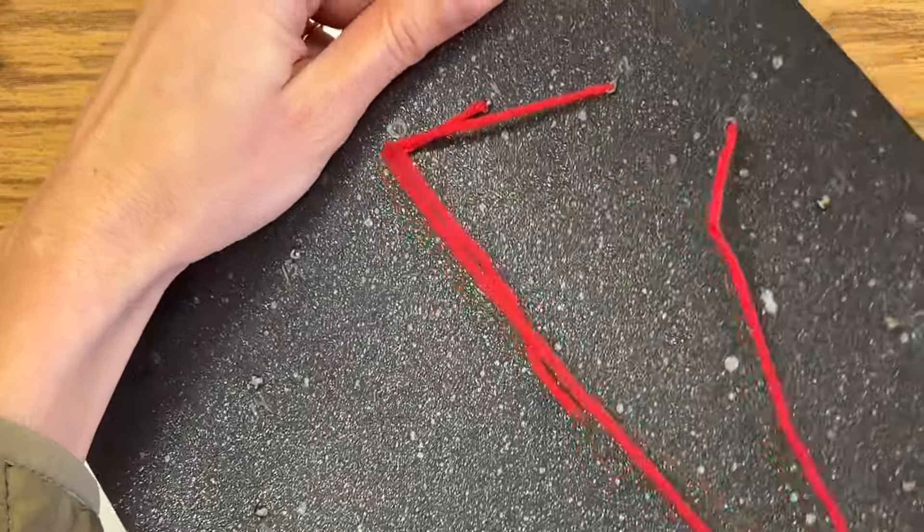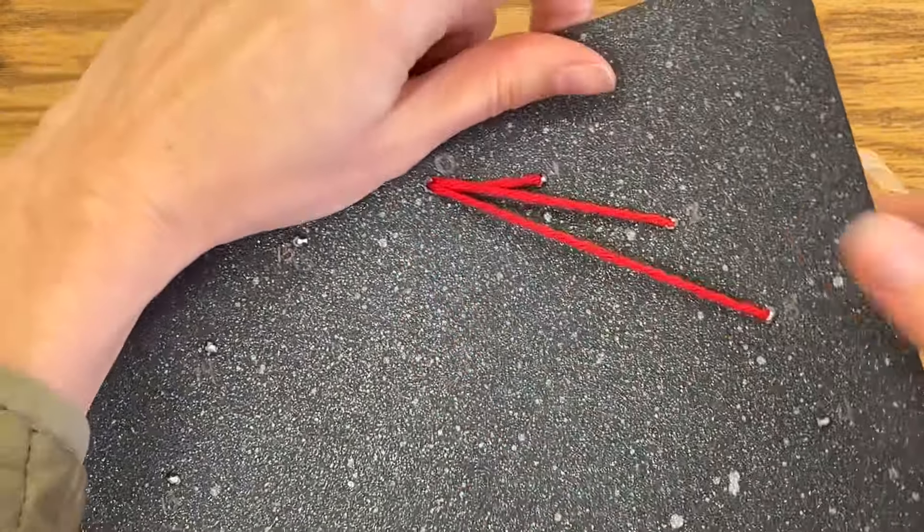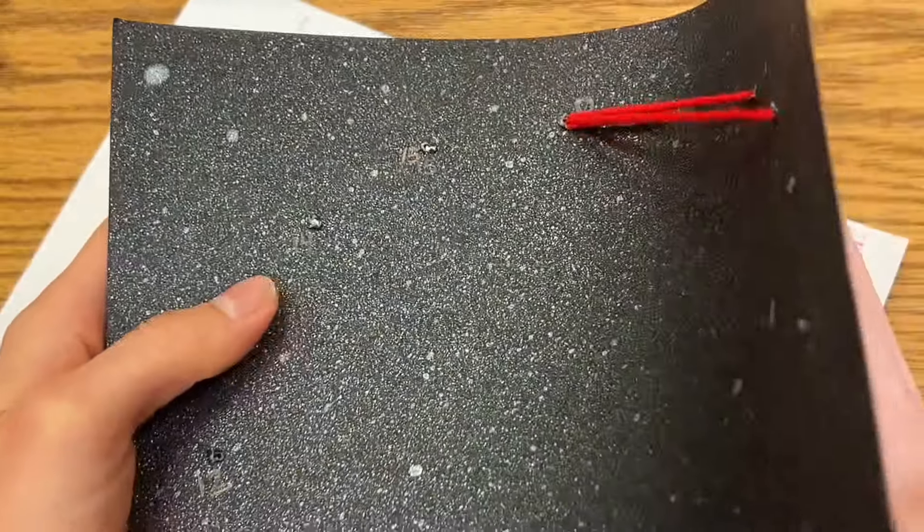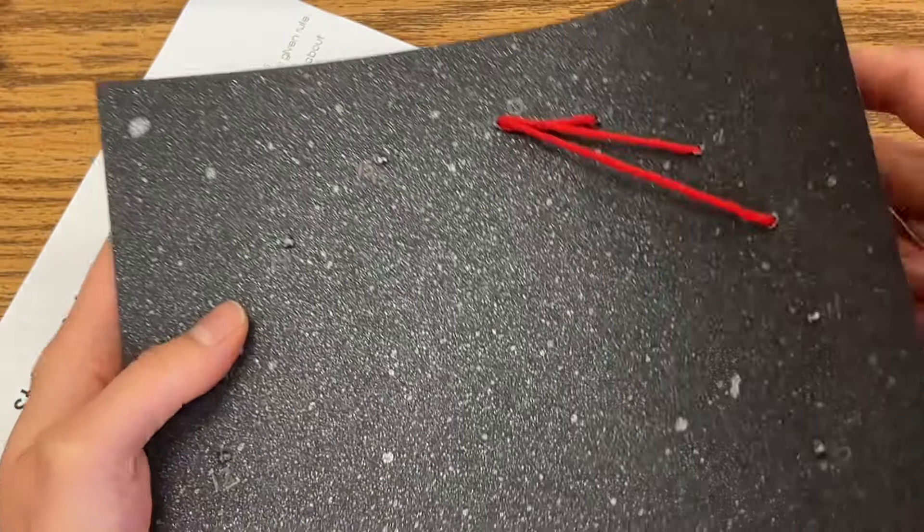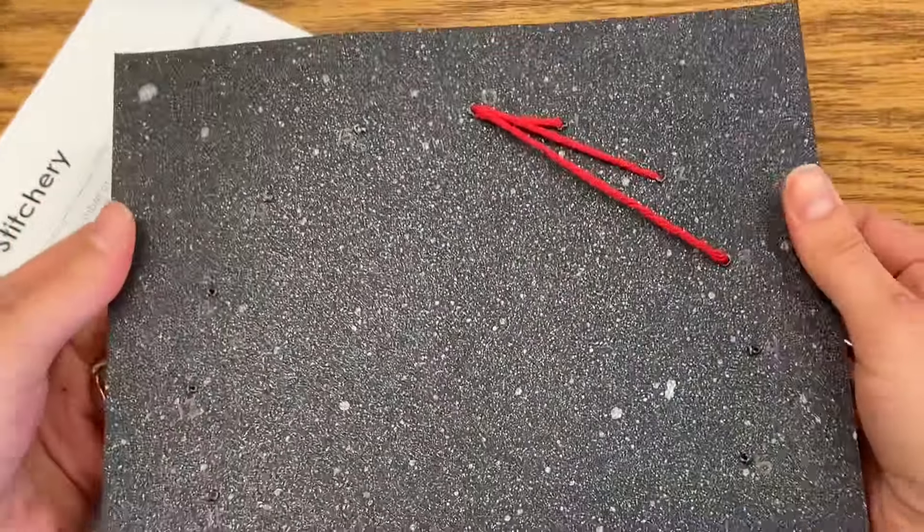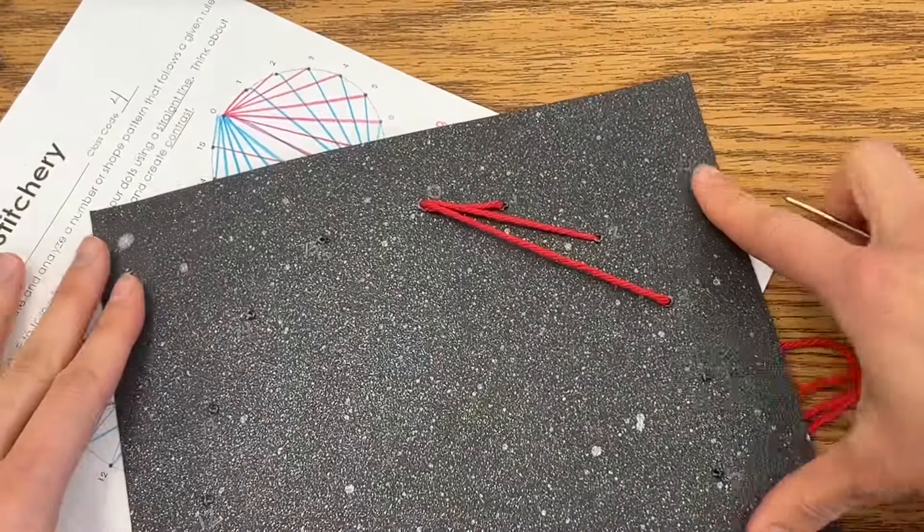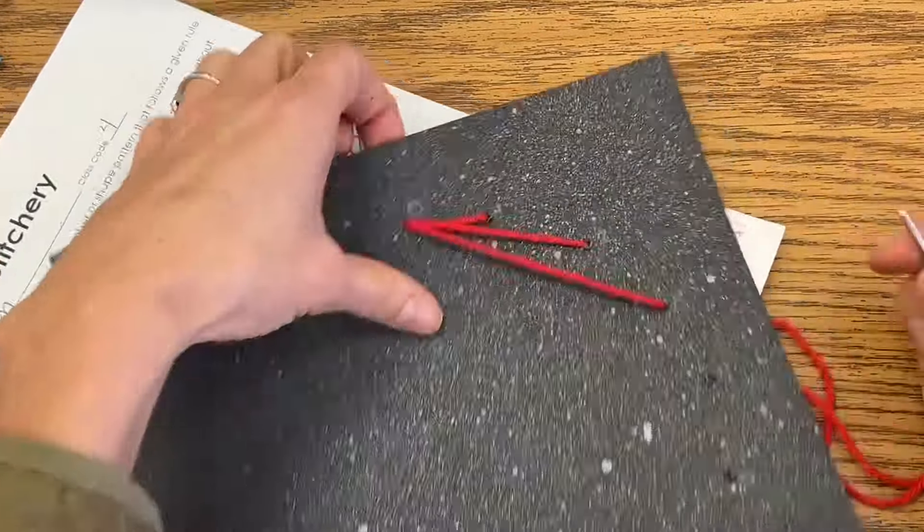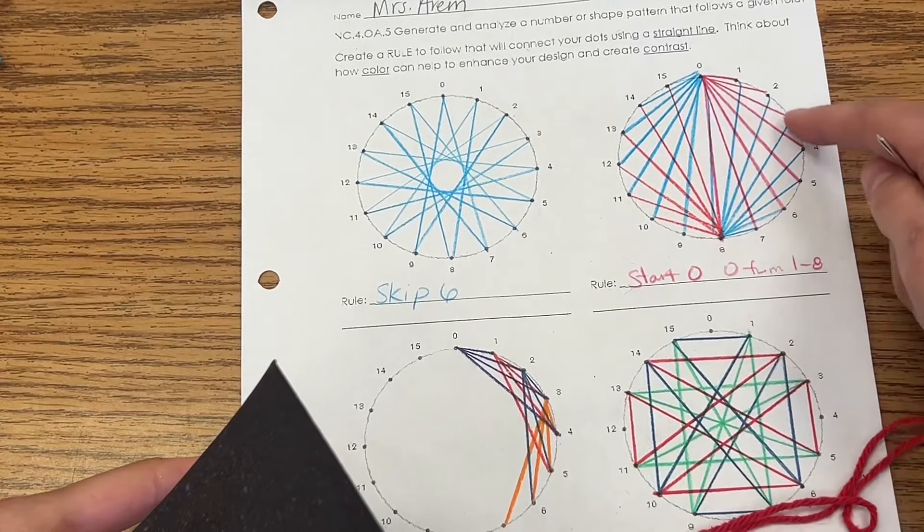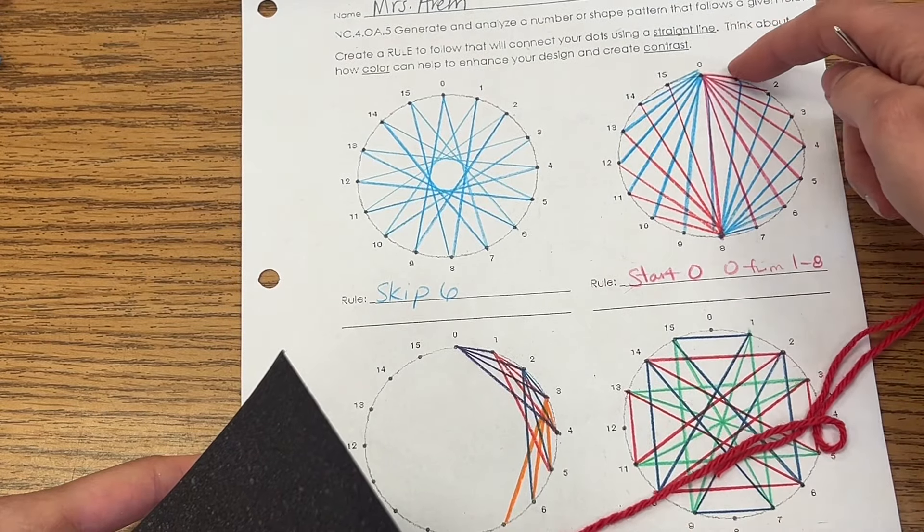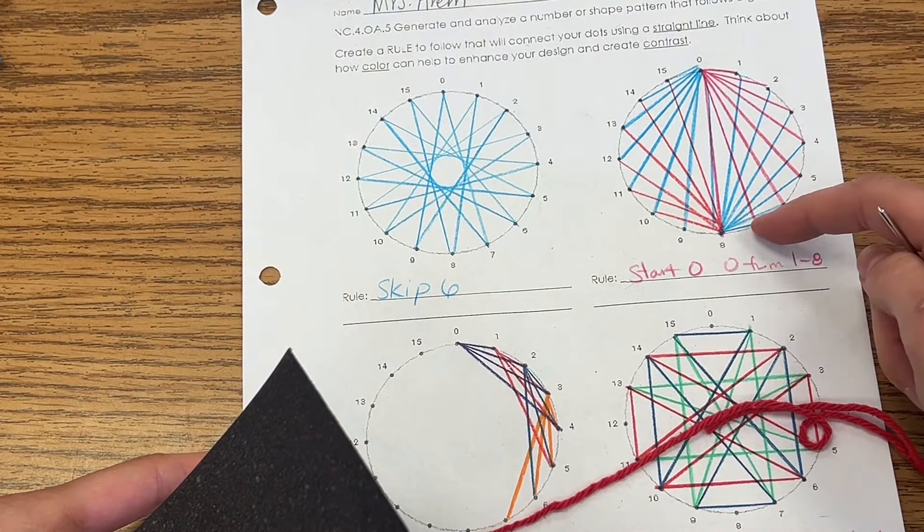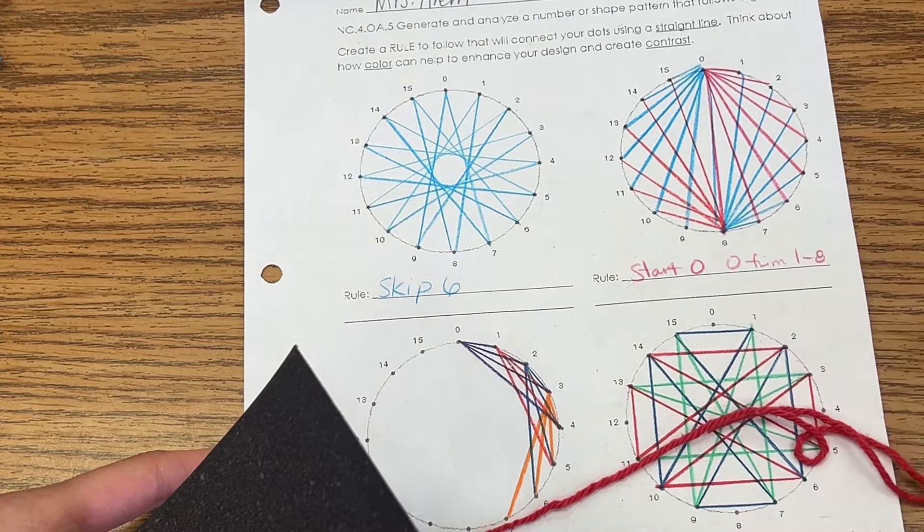Make sure you aren't pulling so tight that your board is curling up. It should lay relatively flat, so pull tight but don't pull it so tight that your board is curling up on you. I'm going to keep on going. My pattern says that I go from zero and I connect all the way down to seven, actually all the way down to eight, so I'm going to go ahead and do that first.